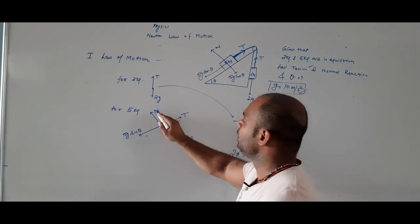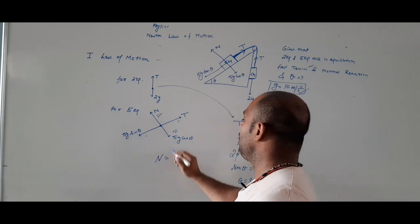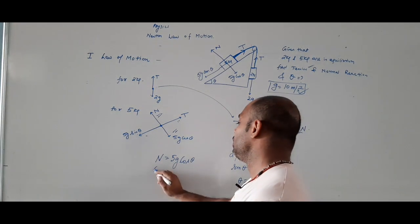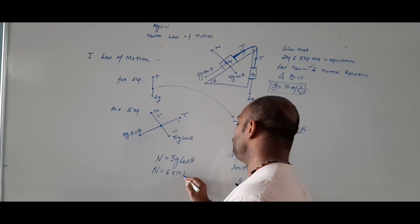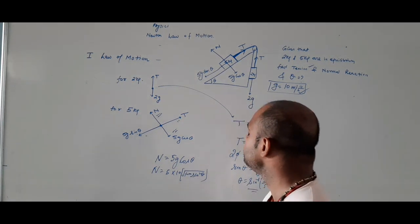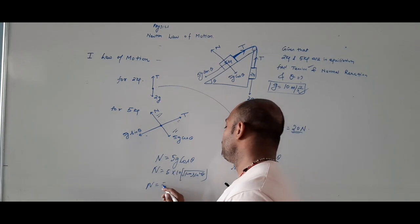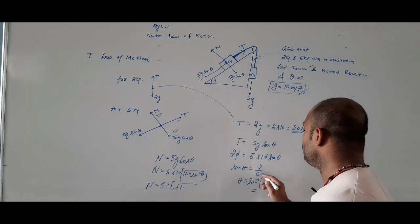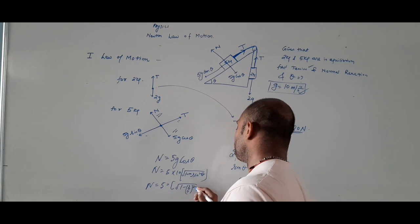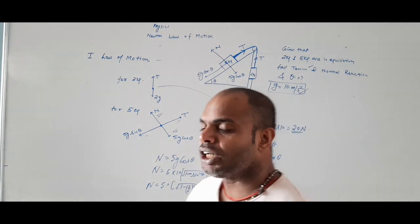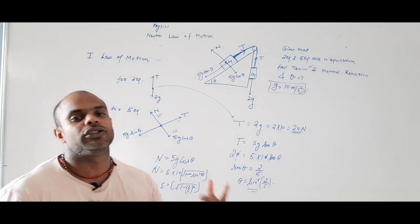Ab normal reaction nikalte hain: N equals 5g cos theta. Cos theta equals under root of (1 minus sin squared theta) equals under root of (1 minus (2/5) squared). So N equals 50 into under root of (1 minus 4/25). Solve karke answer nikal lenge. In this way we solve the inclined plane questions based on Newton's first law of motion.